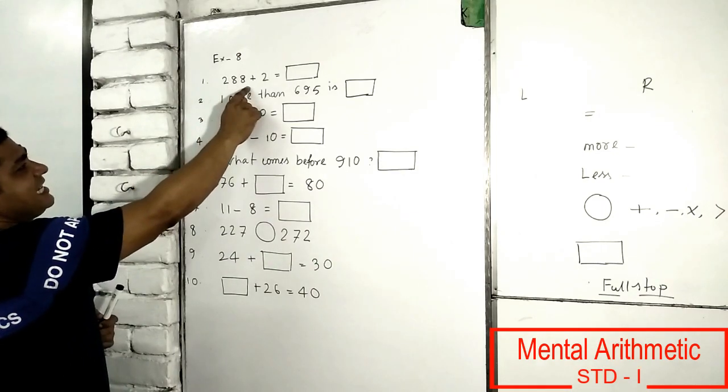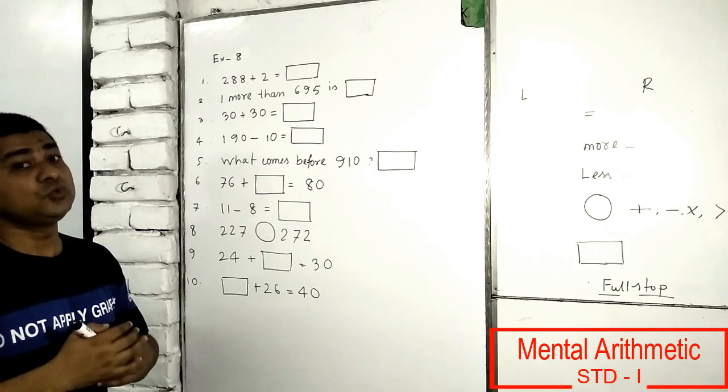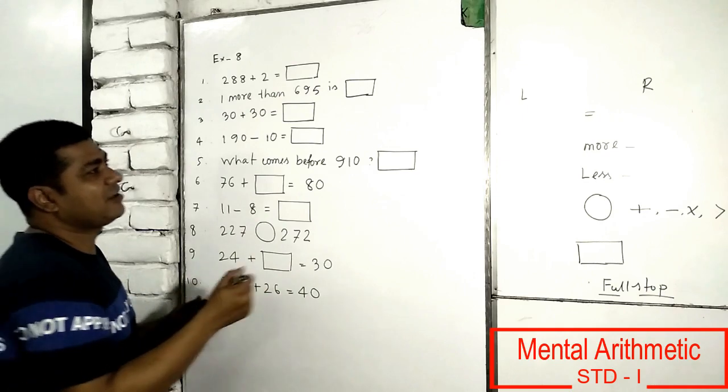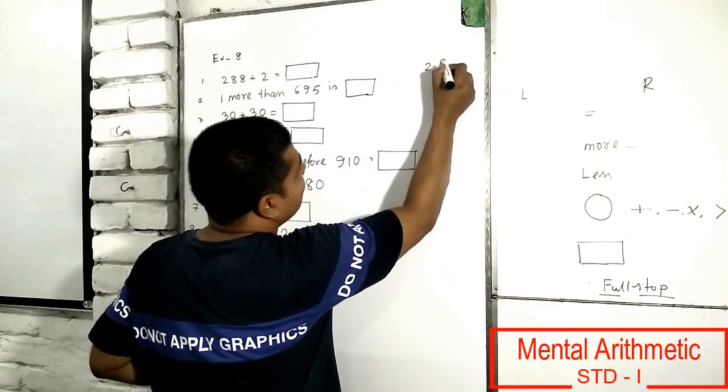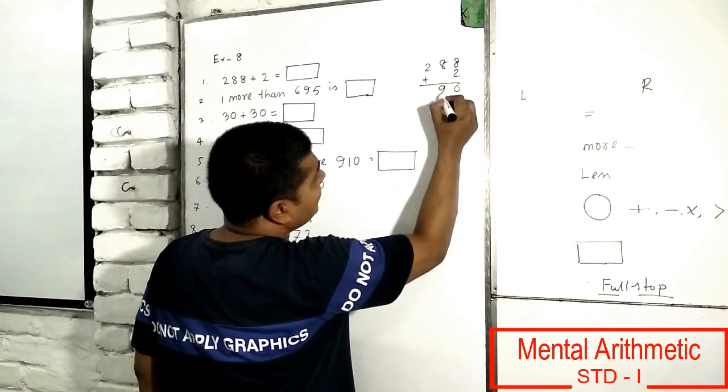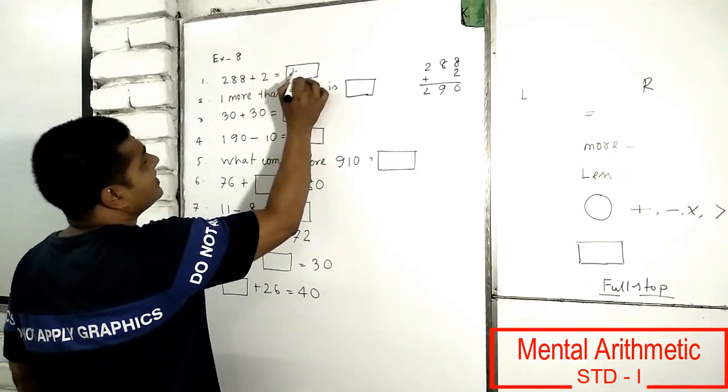Now 288 and 2 you have to plus. If you can't add horizontally, you can write it vertically. Then it will be easier to you. 8 and 2 is 10, 0 and 9 carrying 1 and 2. So 290.